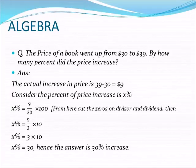Dear friends, today we are going to check another question. The question is: the price of a book went up from $30 to $39. By how many percent did the price increase? From this question, first we have to find out what is the difference — the actual increase in price is 39 minus 30, equal to $9.